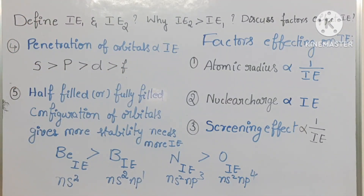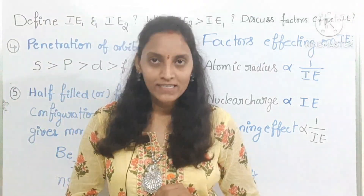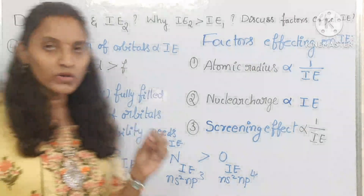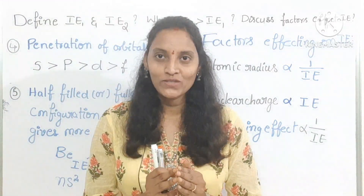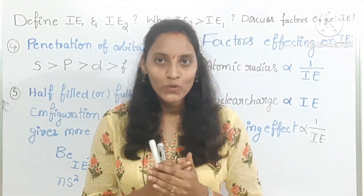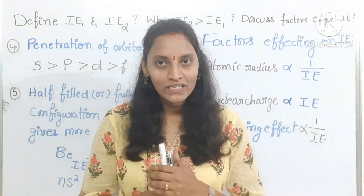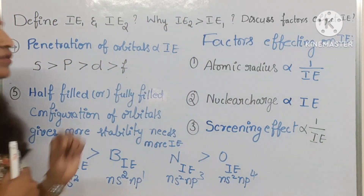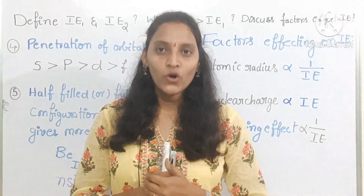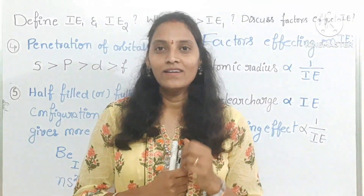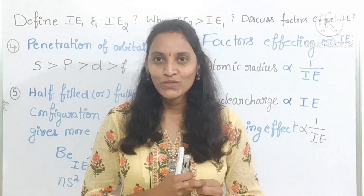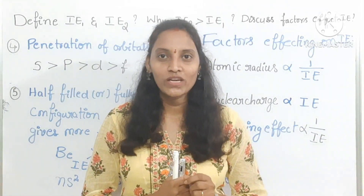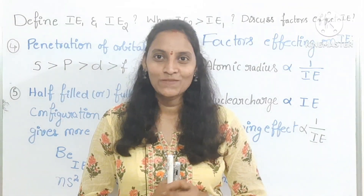I think you all understand this. Just remember all these factors along with their reasons and you will get full marks — eight marks if this question comes in your IPA examinations. These shortcuts are also useful for solving objective bits. If you feel this is useful and informative, please do subscribe, share these videos, and mention your words in the comment box. We will meet in the next class. Bye students.